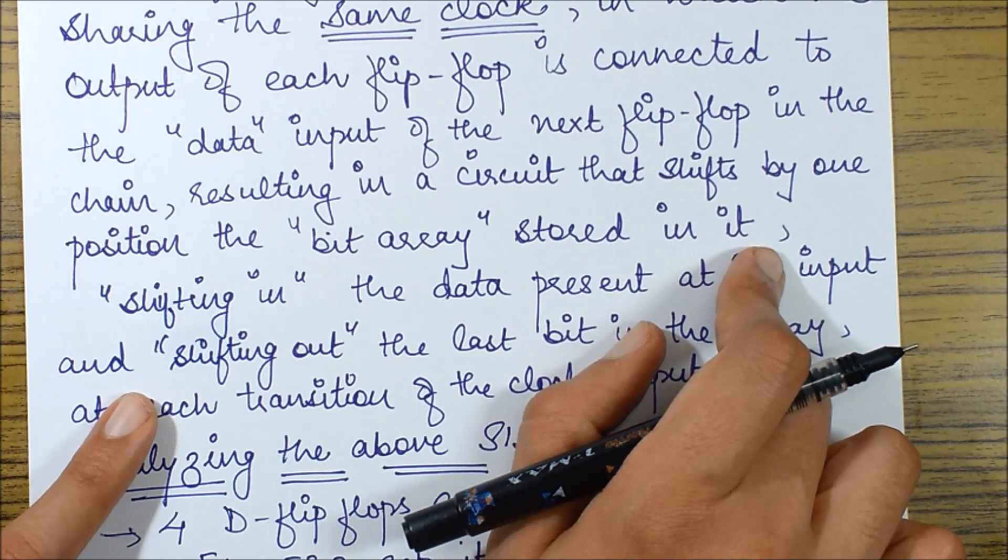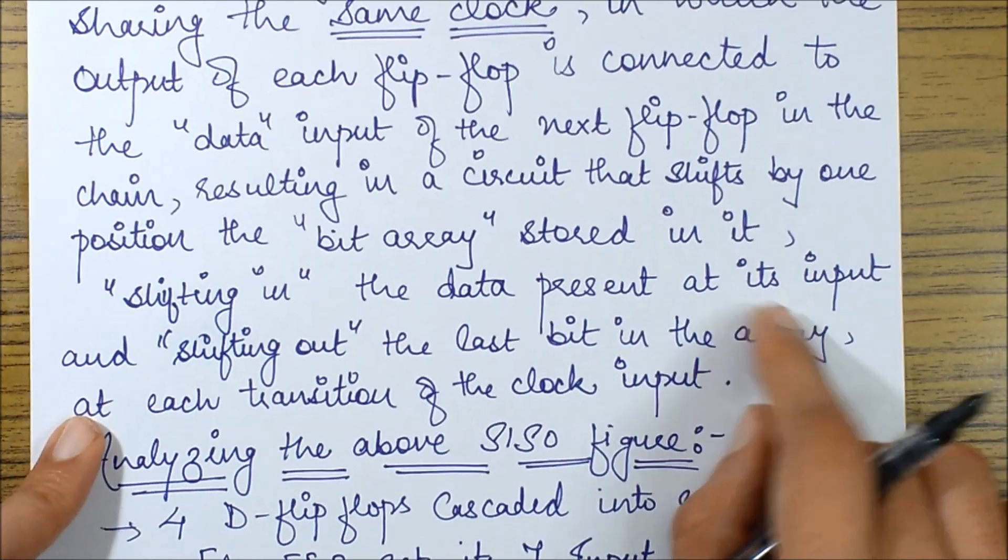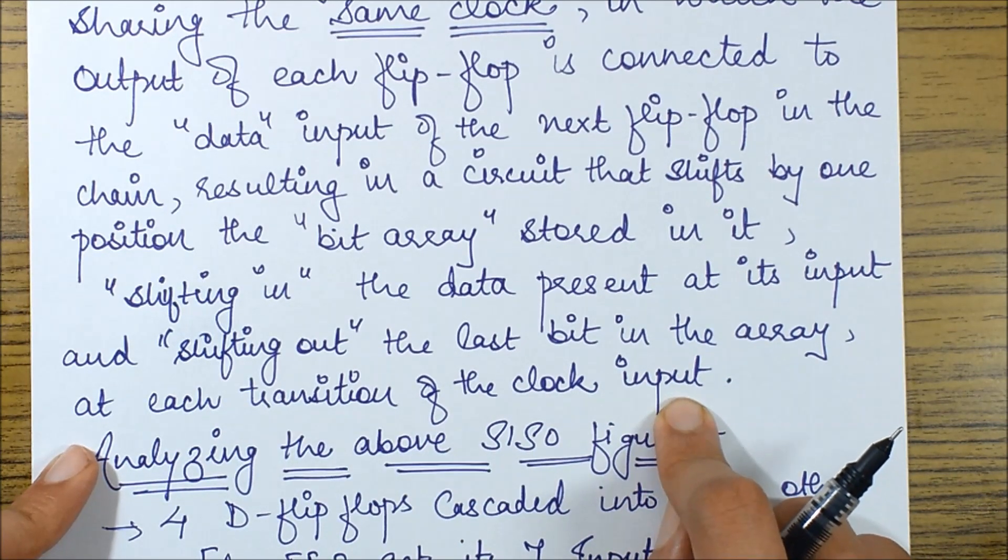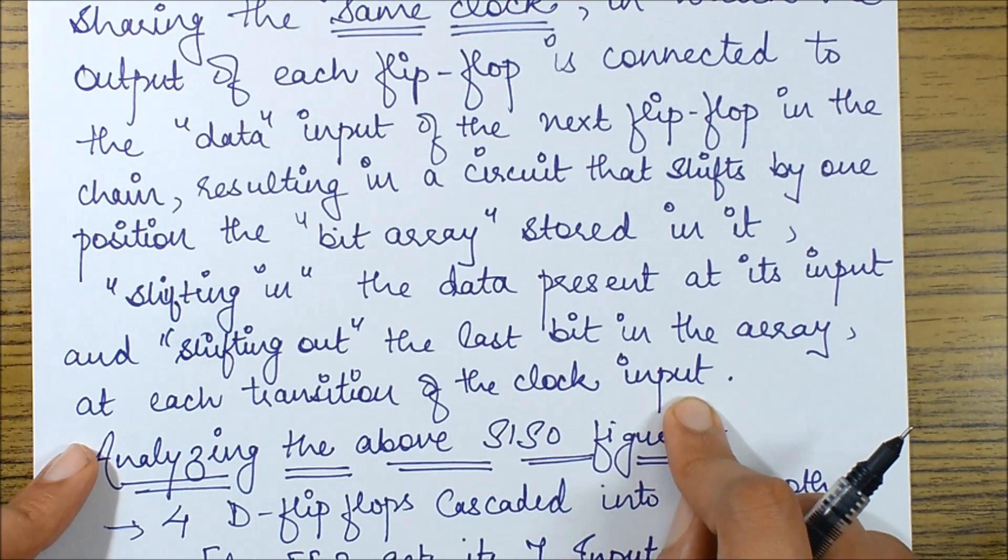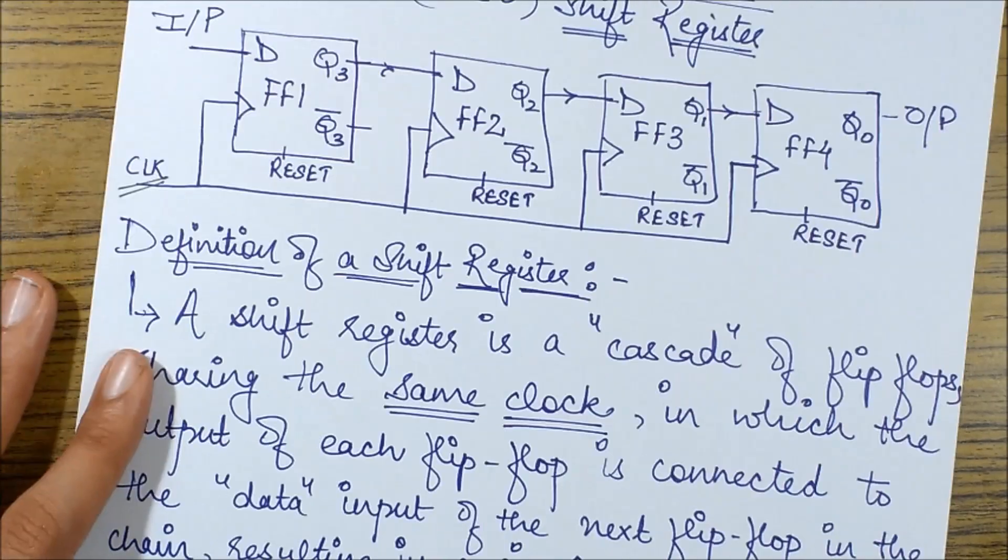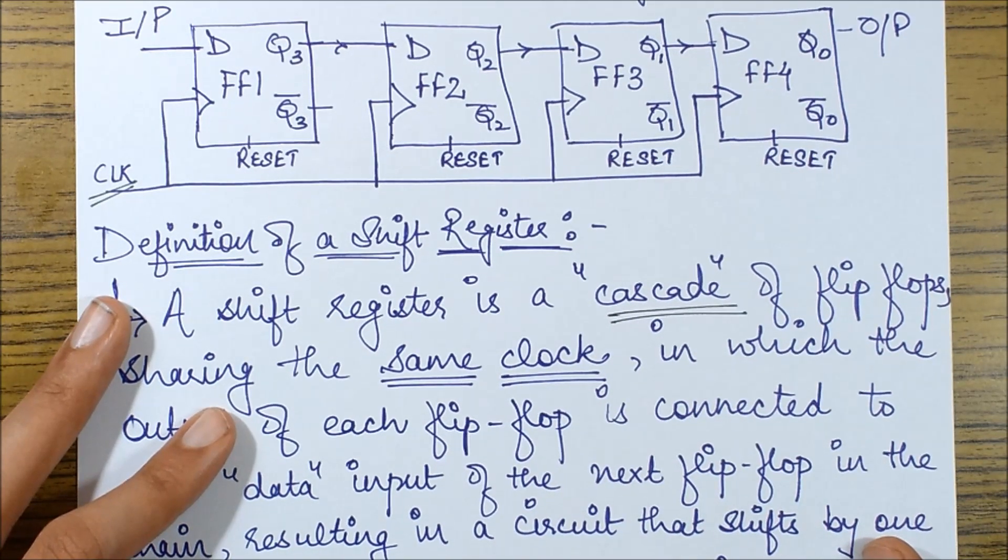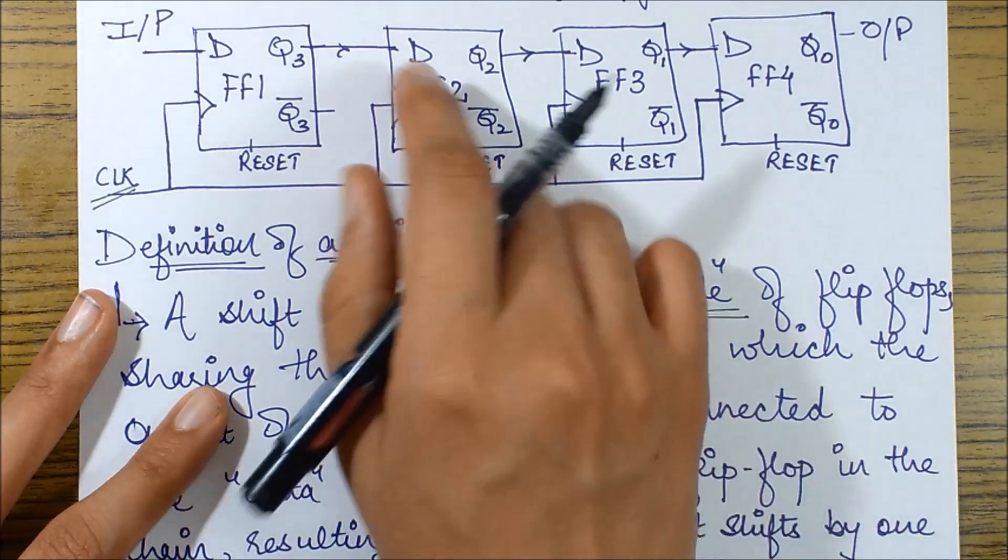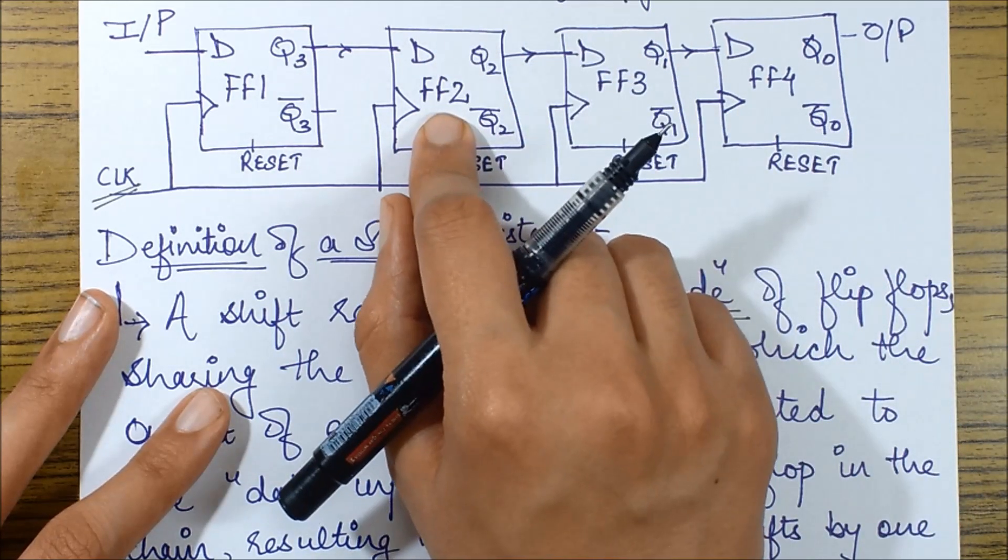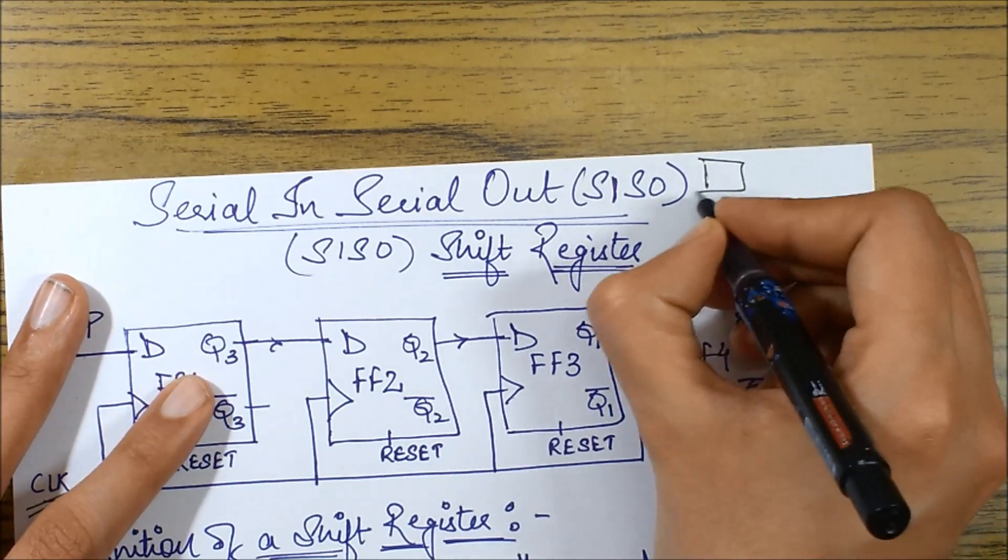Resulting in a circuit that shifts by one position the bit array stored in it. That is, after one clock pulse the input bit will get shifted. We've already discussed in our previous sessions, shifting in the data present at its input and shifting out the last bit in the array at each transition of the clock pulse. So with every transition of the clock pulse one bit will get shifted.